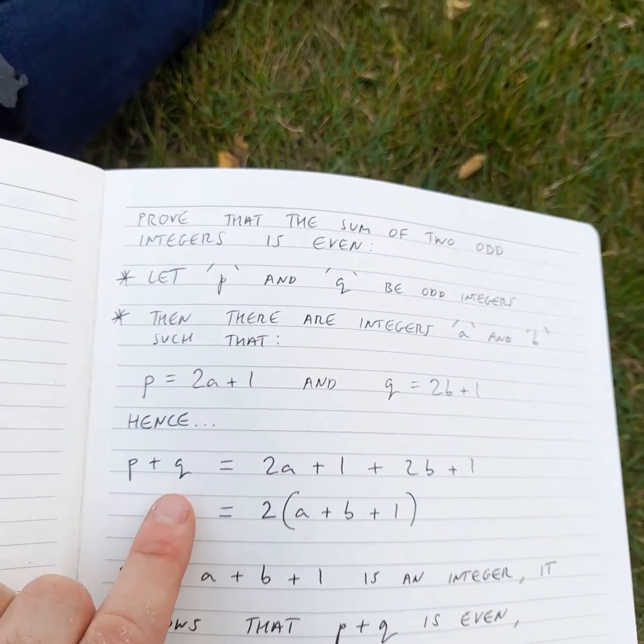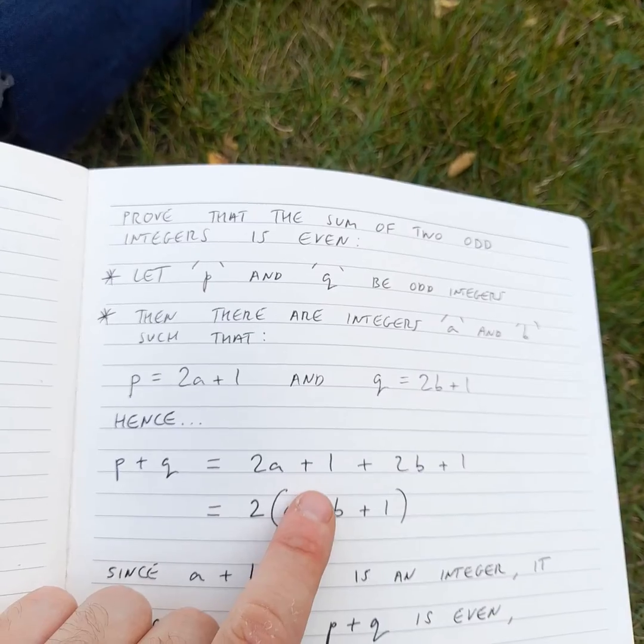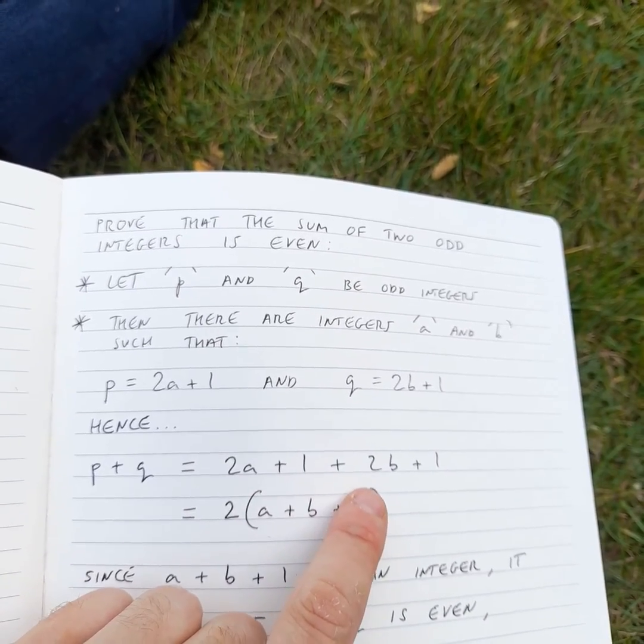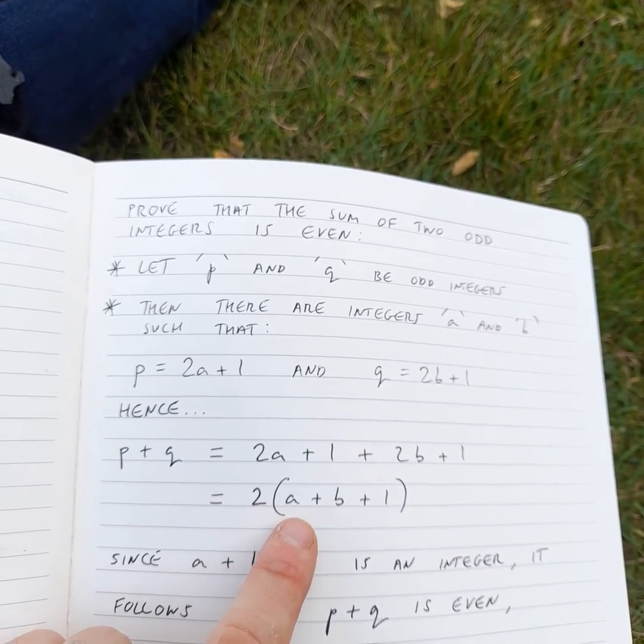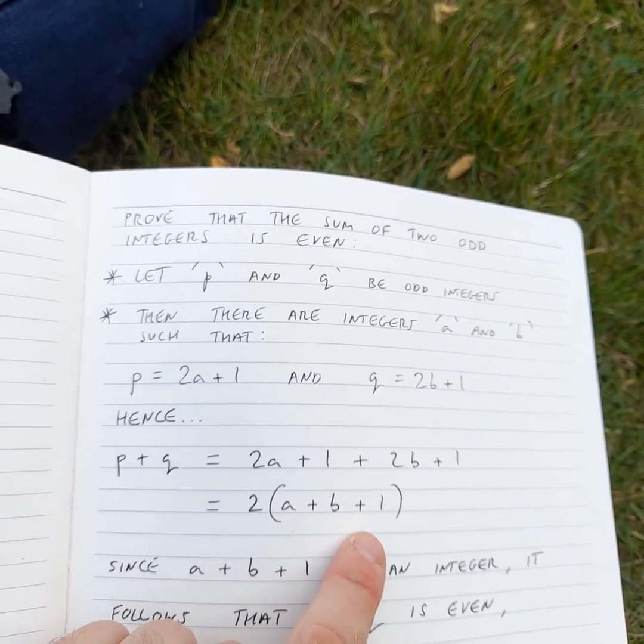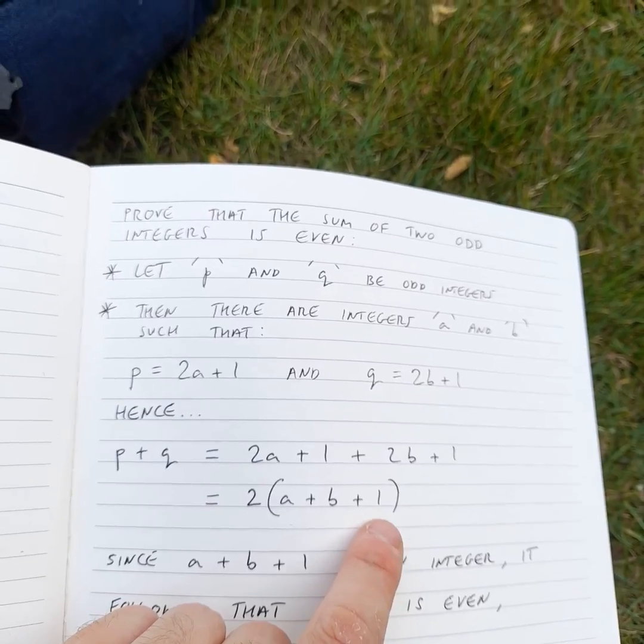Hence, p plus q is 2a plus 1 plus 2b plus 1, and this gives us 2 times a plus b plus 1 in brackets.